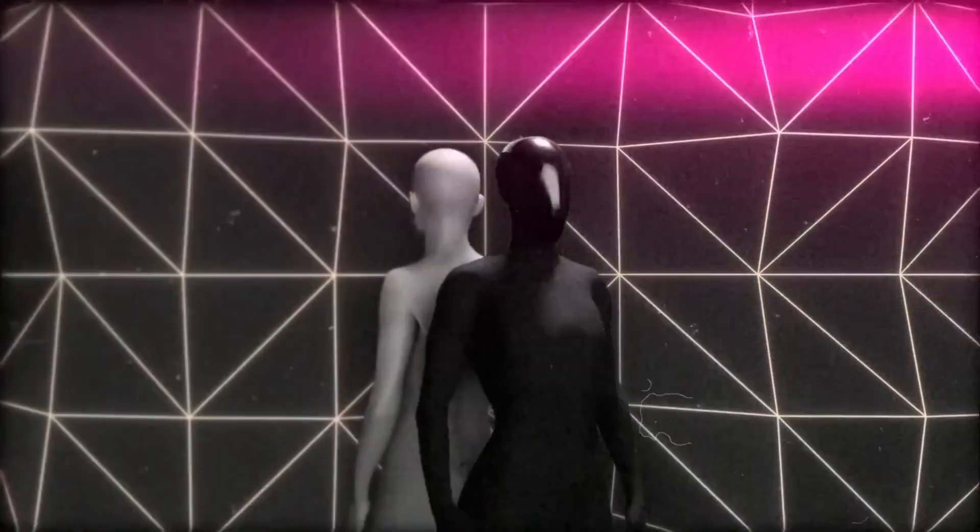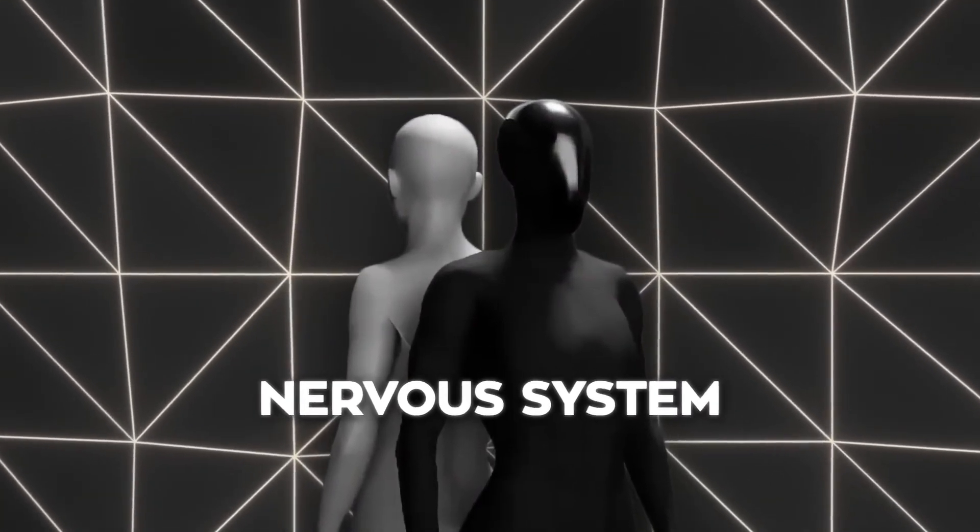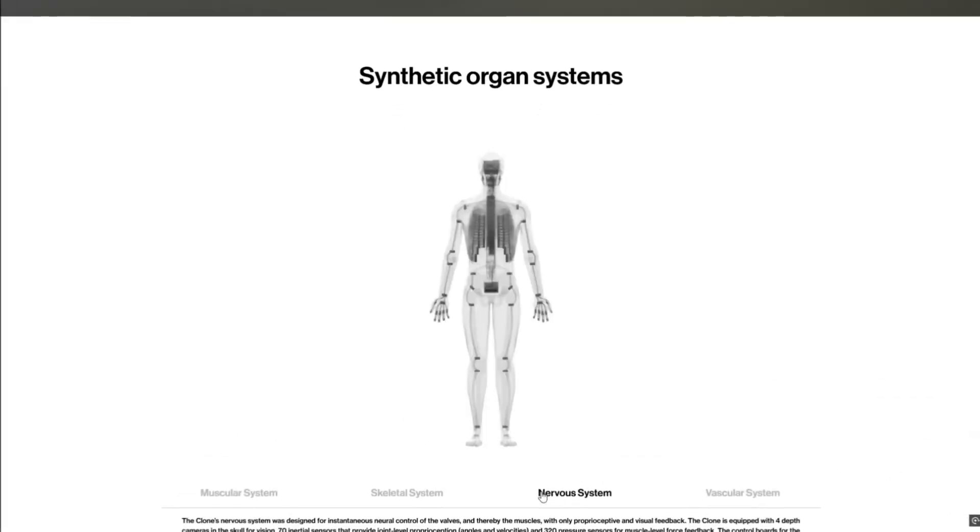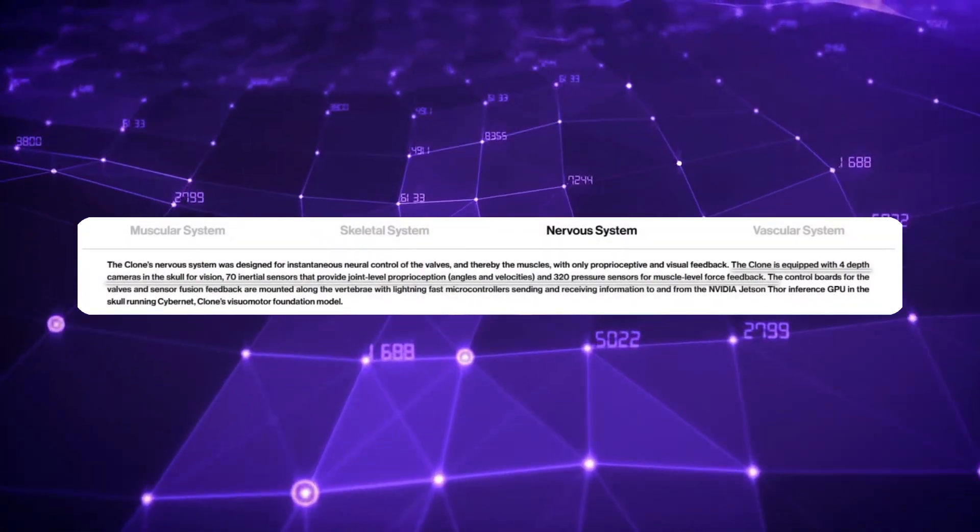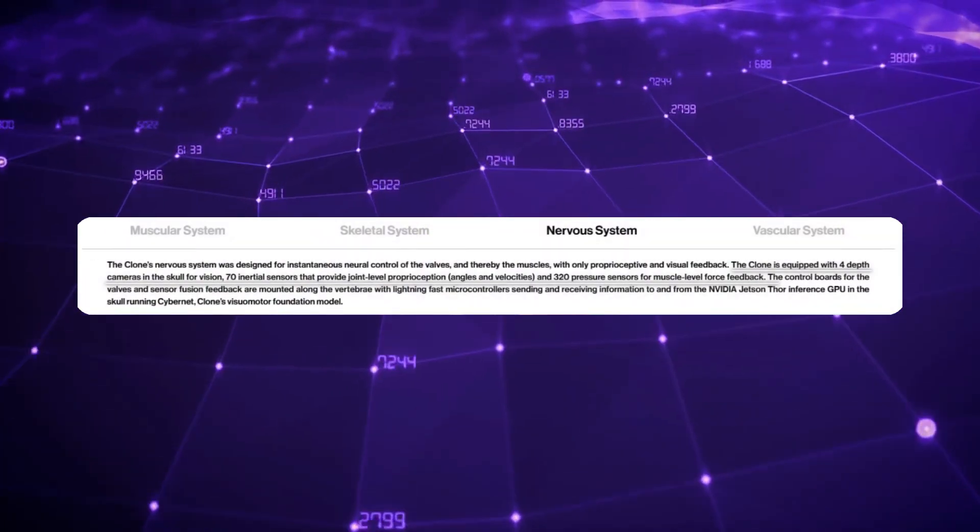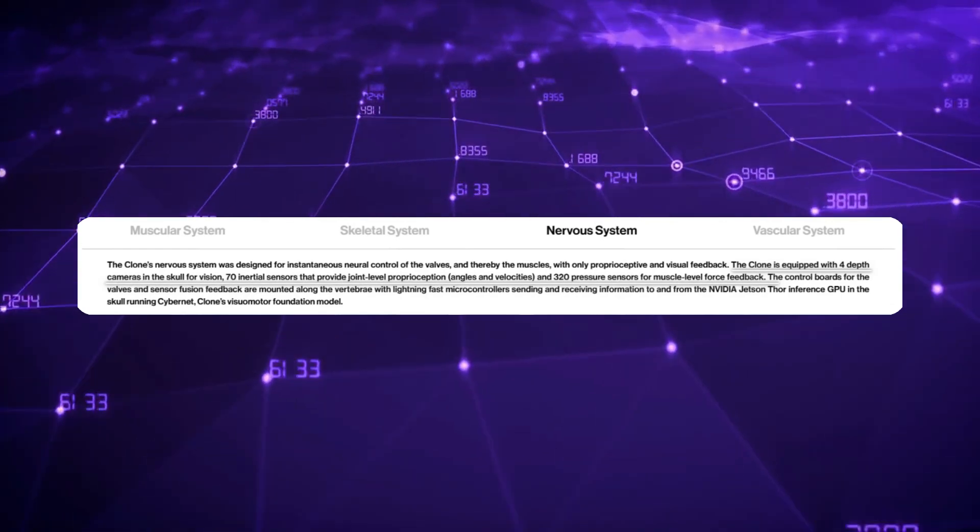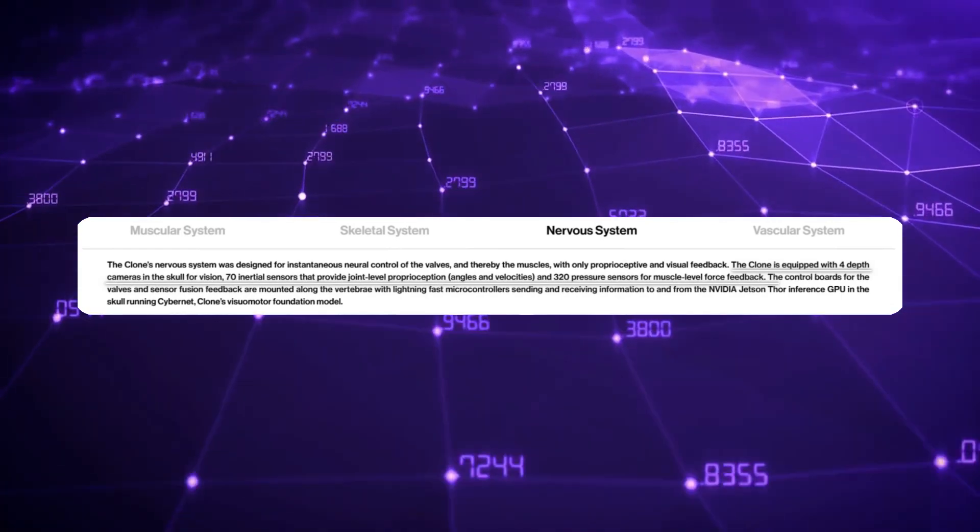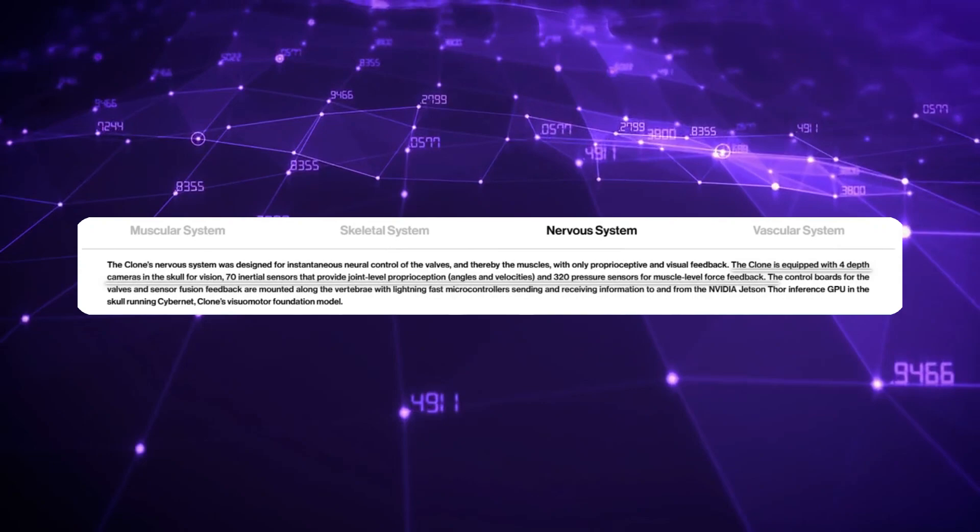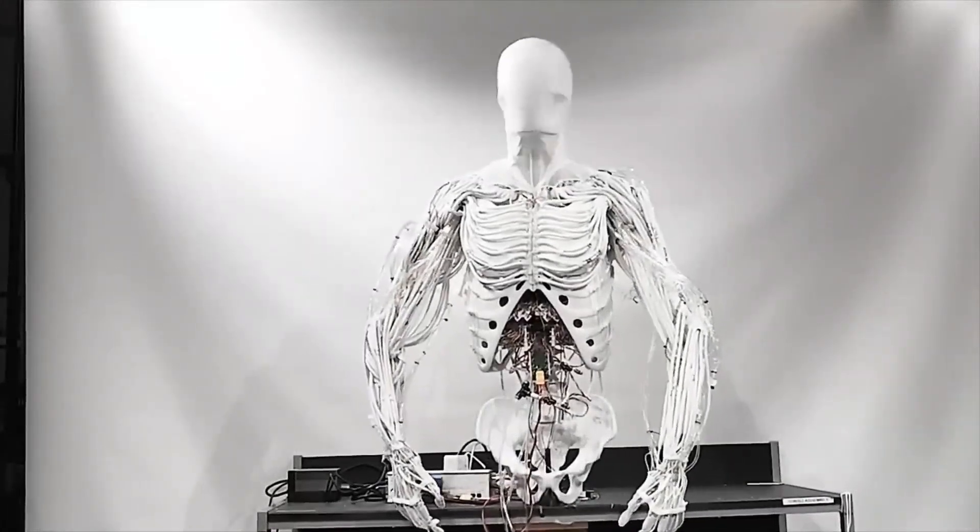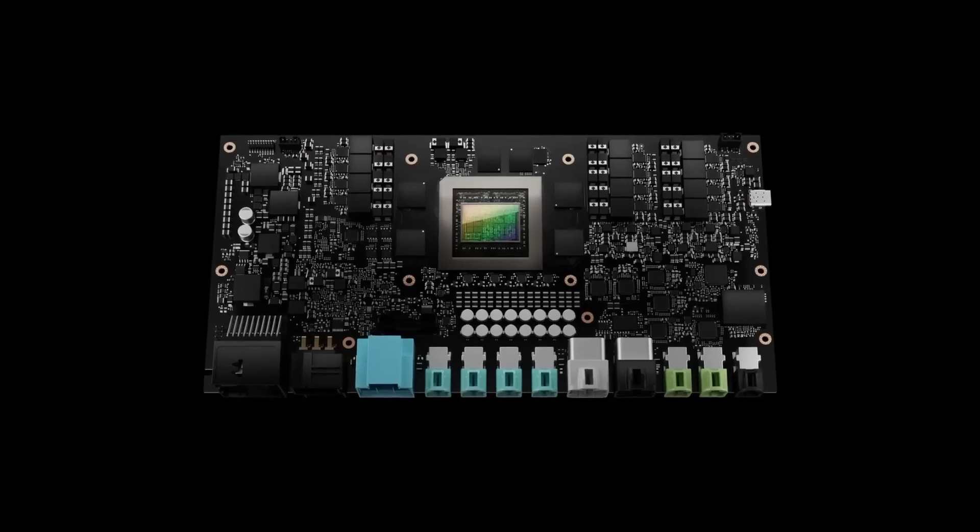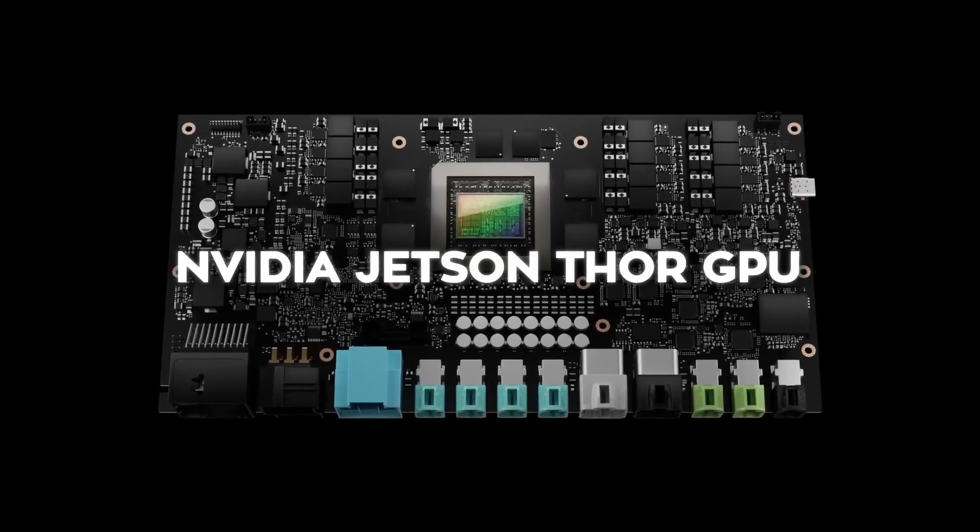Now let's talk about Clone Alpha's nervous system. This part is equally impressive. The robot combines multiple layers of sensors and computational models to control its movements. It's equipped with four depth cameras for visual input, 70 inertial sensors to monitor joint positions, and 320 pressure sensors embedded in its muscles. All of this data gets processed in real time by microcontrollers, which then send it to an NVIDIA Jetson Thor GPU running Clone's Cybernet model.